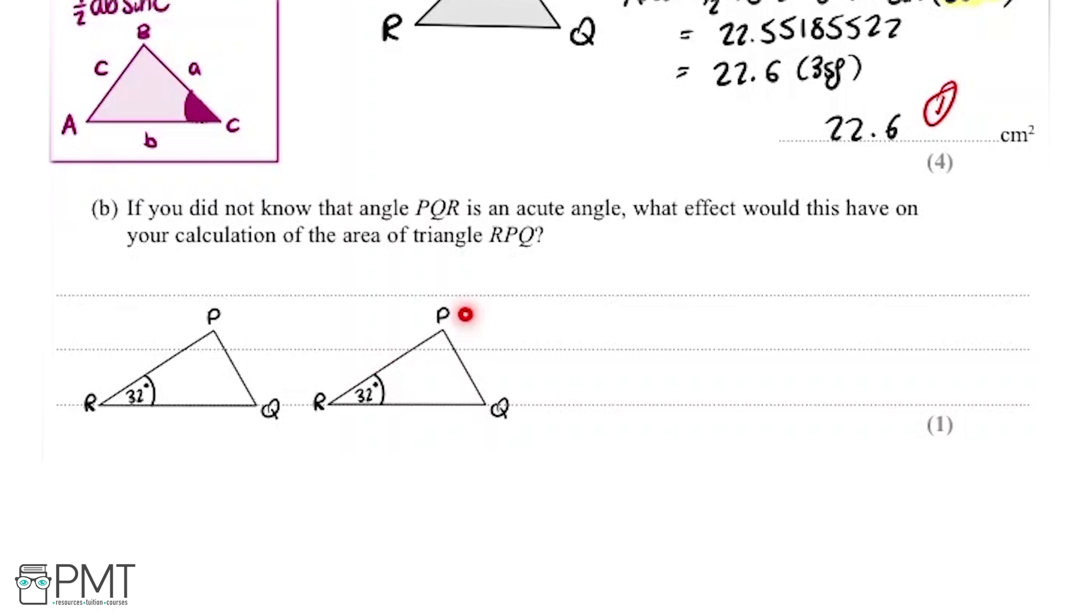I'm going to model what that could look like on this triangle here. This angle is going to stay the exact same. The only thing that's going to change is this from acute to obtuse. So if I made it obtuse, so bigger than 90 degrees, it'll be something like that, and P will be up there. So this is the triangle when the angle is acute, and this is the triangle, or an example of it, when it's obtuse.